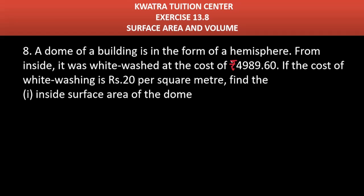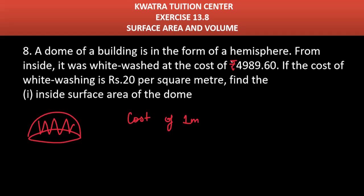Question number 8 says a dome of a building is in the form of a hemisphere. From inside, it was whitewashed at a cost of 4989.60 rupees. The cost of whitewashing 1 square meter is 20 rupees. We have to find the inner surface area of the dome.